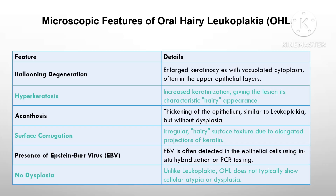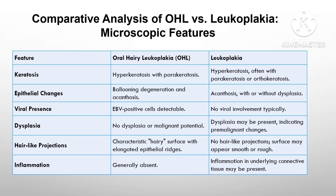For oral hairy leukoplakia, microscopic features show ballooning degeneration of keratinocytes, giving the surface its characteristic hairy appearance. Hyperkeratosis — specifically hyperparakeratosis — and surface corrugations are common. Unlike leukoplakia, there is no dysplasia in OHL. Instead, Epstein-Barr virus is present within the cells, and these infected cells are termed koilocytes, which have a perinuclear halo. Understanding these features is essential for differentiating between the two conditions.